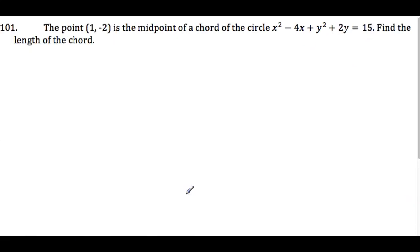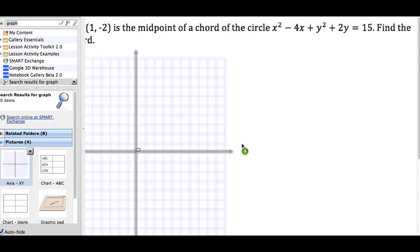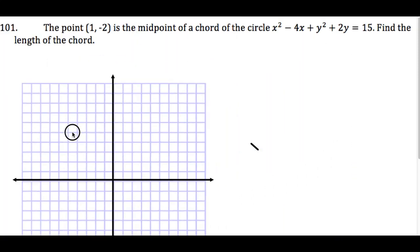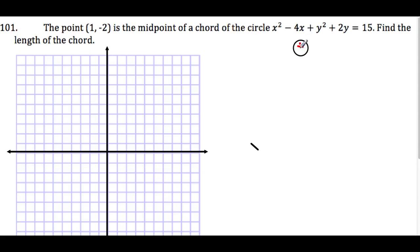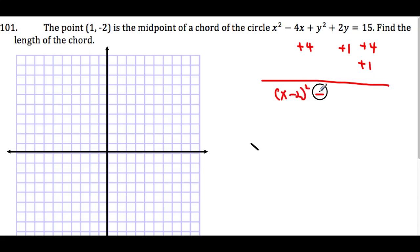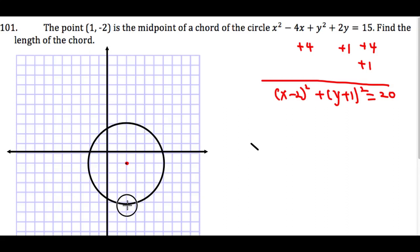Number 101: a point is the midpoint of a chord in the circle. Find the length of the chord. Adding 4 and 1 to complete the square: (x − 2)² + (y + 1)² = 20. That means our center is at (2, −1) and the radius is √20, which is a bit more than 4.